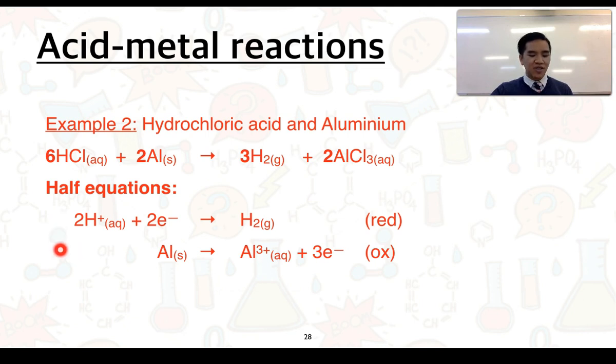In this case, the electrons aren't equal, so we need to multiply each half equation by an appropriate coefficient. So in this case, we would need to multiply this top one by three to get a total of six electrons gained. And for the oxidation half equation, multiplying by two. And this will ensure that the number of electrons lost and gained are equal.